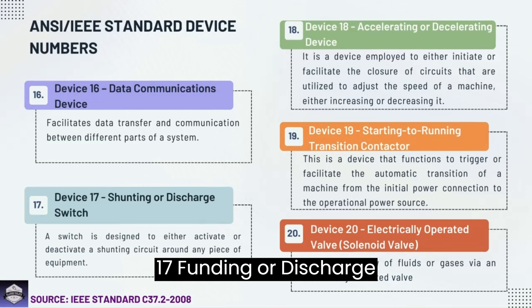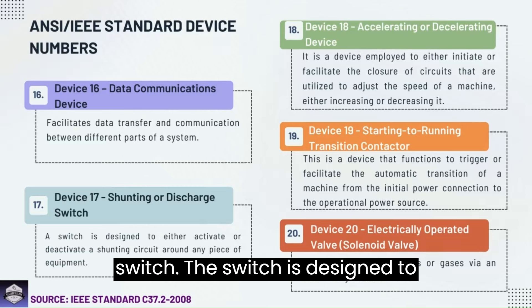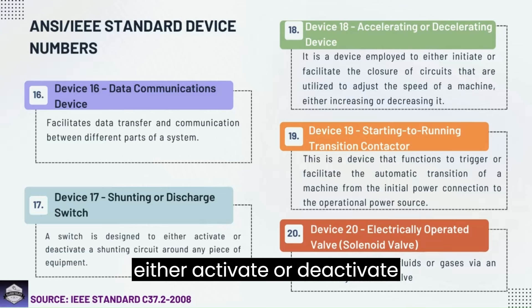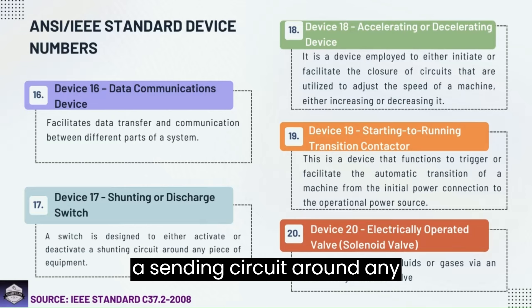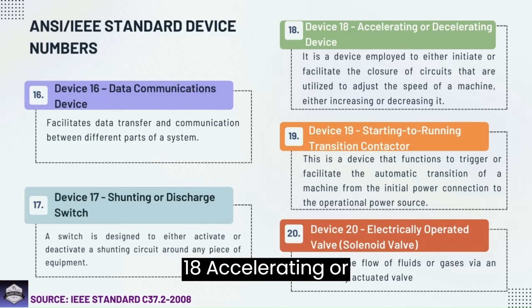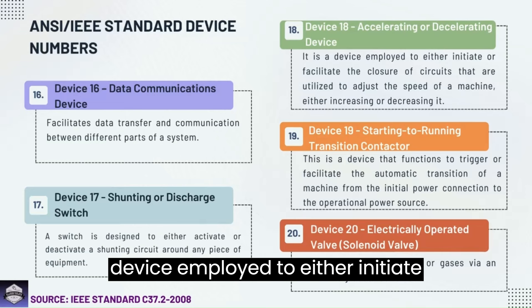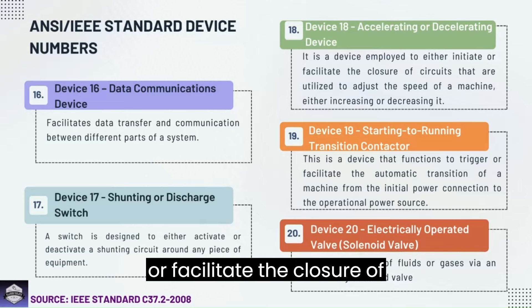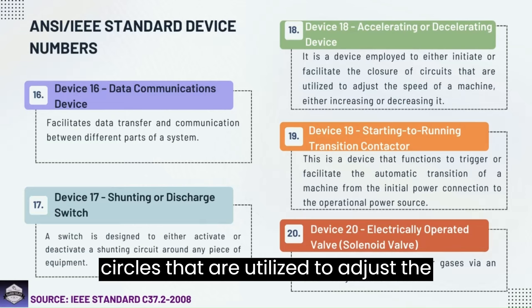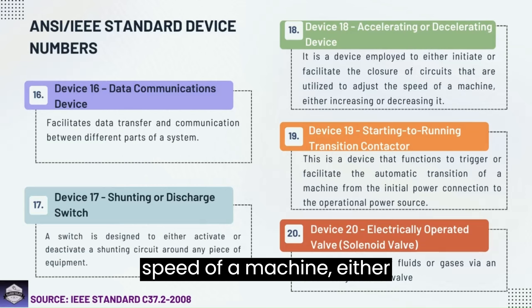Device 17: Shunting or discharge switch — a switch designed to either activate or deactivate a shunting circuit around any piece of equipment. Device 18: Accelerating or decelerating device — a device employed to either initiate or facilitate the closure of circuits used to adjust the speed of a machine, either increasing or decreasing it.